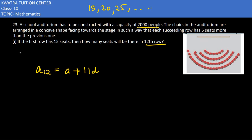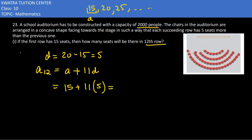The common difference d is 20 minus 15, which is 5. So a is 15 and d is 5. 11 into 5 gives 55, and 55 plus 15 results in 70. So the 12th row has 70 seats.